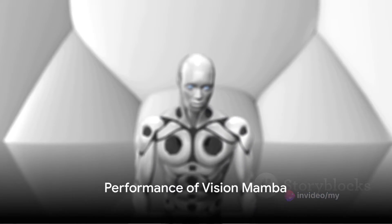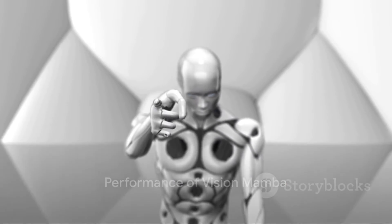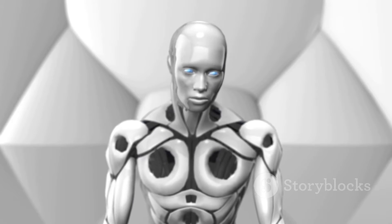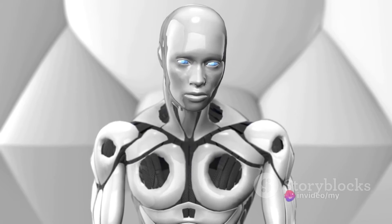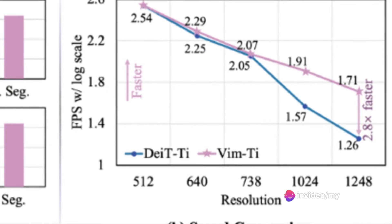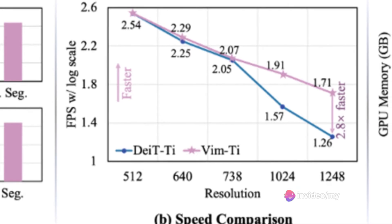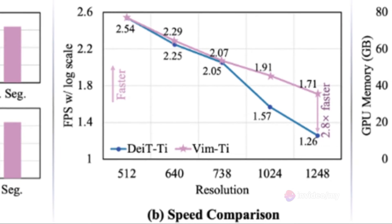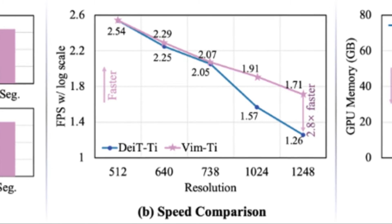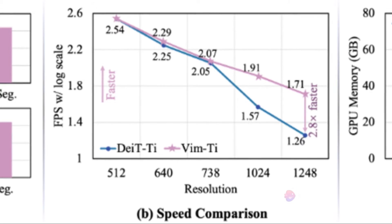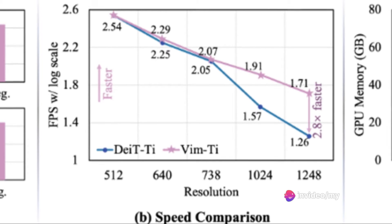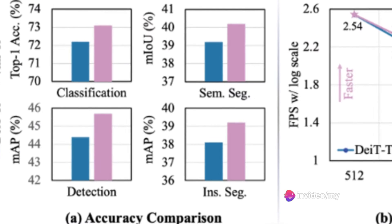In terms of performance, Vision Mamba has been put to the test against DIT, a well-established vision transformer, and has come out on top. Whether it's ImageNet classification, COCO object detection, or ADE20K semantic segmentation tasks, Vision Mamba outperforms DIT. What's more, it's 2.8 times faster than DIT and saves 86.8% GPU memory when performing batch inference to extract features on images with a resolution of 1248 x 1248.